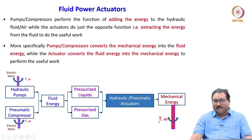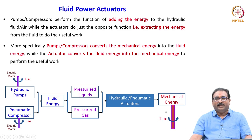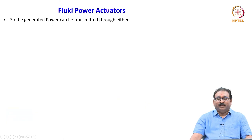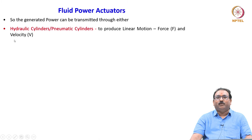At the output, we get torque or angular velocity in the case of motors. If using a cylinder, we get force and velocity. Force is decided by the input pressure and velocity is decided by the input flow rate. This block diagram illustrates hydraulic motors and pneumatic motors, and generated power can also be transmitted through hydraulic or pneumatic cylinders to produce linear motion.